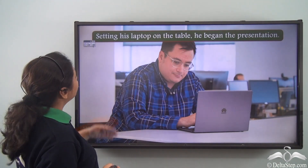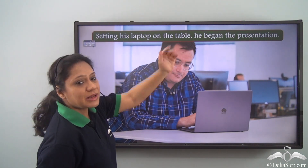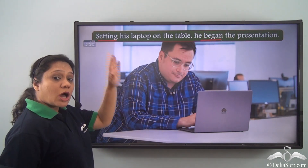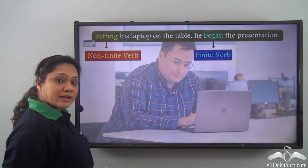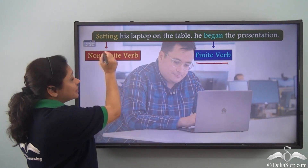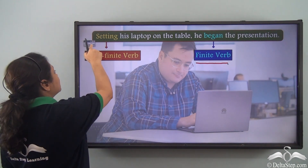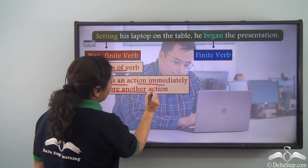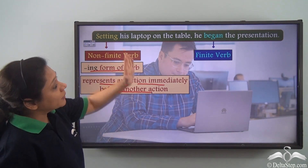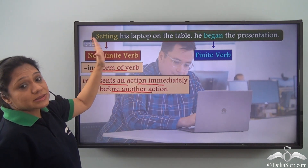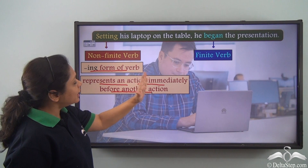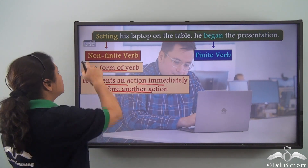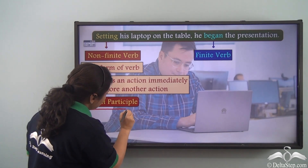Consider the sentence: 'Setting his laptop on the table, he began the presentation.' The verbs are 'setting' and 'began'. Here, 'setting' is the non-finite verb whereas 'began' is the finite verb. This non-finite verb 'setting' represents an action immediately before another action — first he set his laptop on the table, and then he began the presentation. So in this sentence, 'setting' is also the present participle.